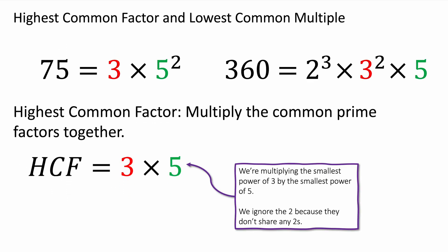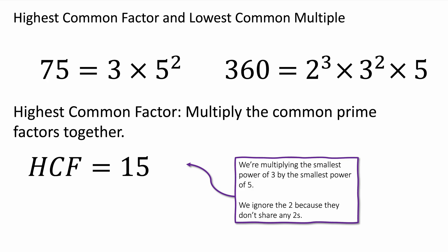For the highest common factor, we are going to multiply the common factors together. 75 and 360 both have a 3, and the lowest power of 3 that they both share is 1 — 75 doesn't have 3 squared, it just has 3 to the power of 1. They also both have a 5, and 360 doesn't have 5 squared, it just has 5 to the power of 1, so you choose the lowest power. The highest common factor is 3 times 5, which is 15. We're multiplying the smallest power of 3 and the smallest power of 5 that they share. We ignore the 2s because 75 doesn't have any 2s.